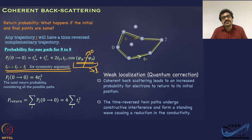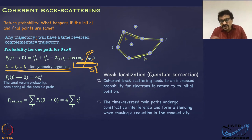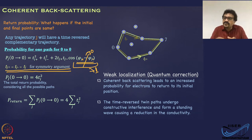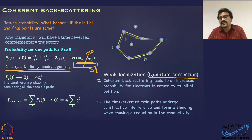This situation — where electrons are localized because forward and reverse propagating time-reversed paths undergo constructive interference — is called weak localization. It is a quantum mechanical effect. The effect is that coherent backscattering leads to an increased return probability. The time-reversed thin paths undergo constructive interference and form a standing wave, causing a reduction in conductivity. This is a quantum correction to the classical conductivity or resistivity.